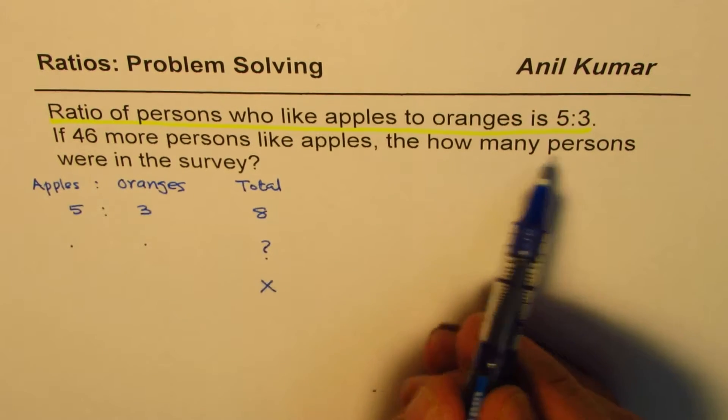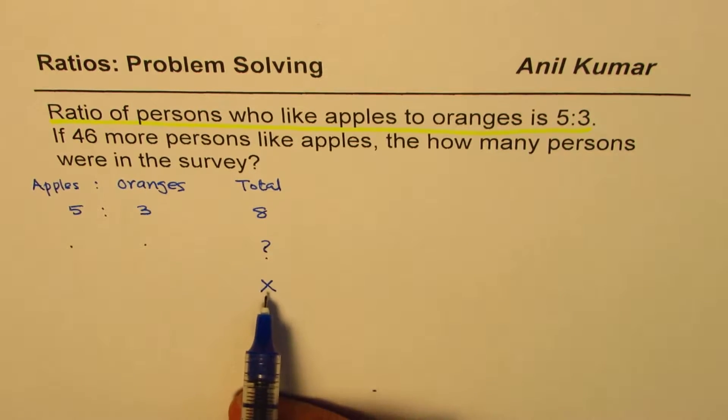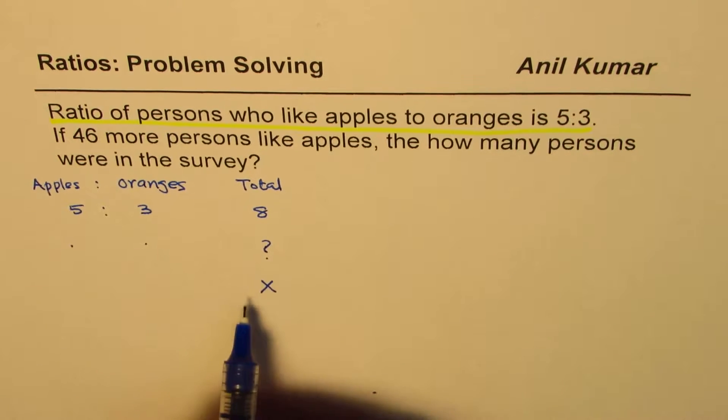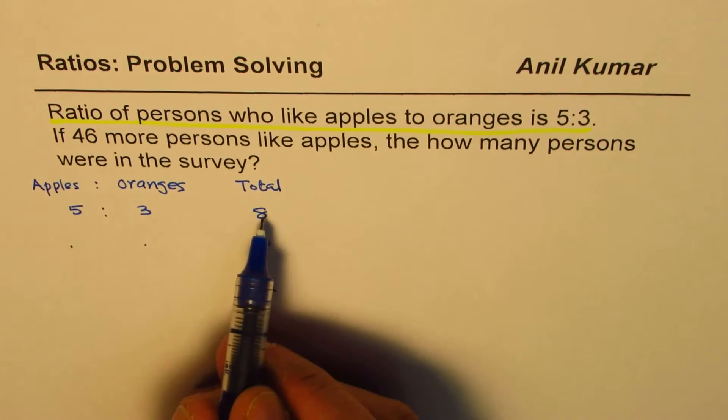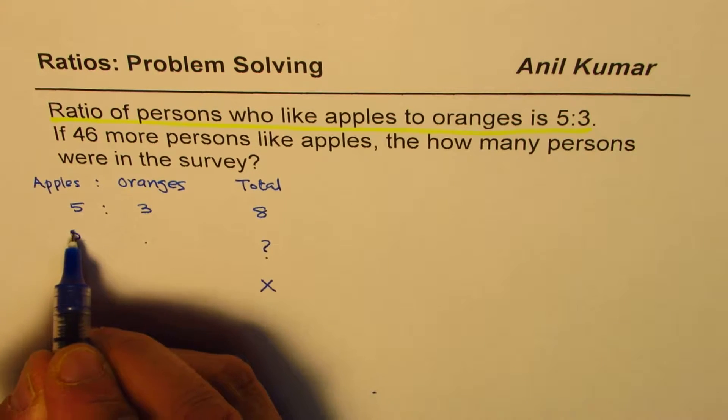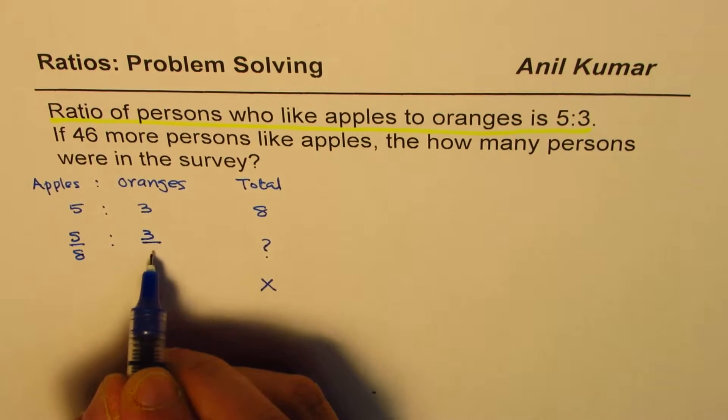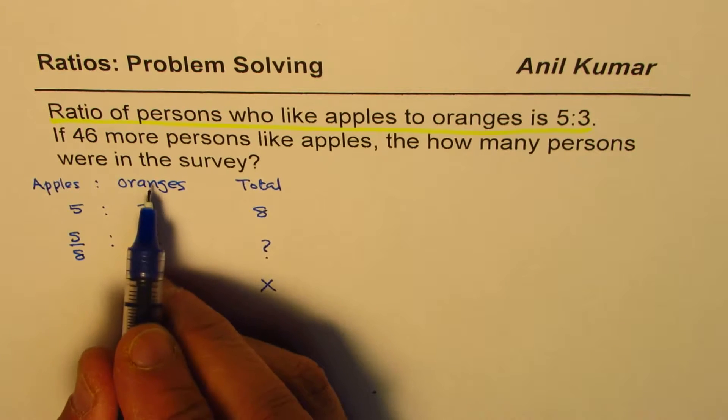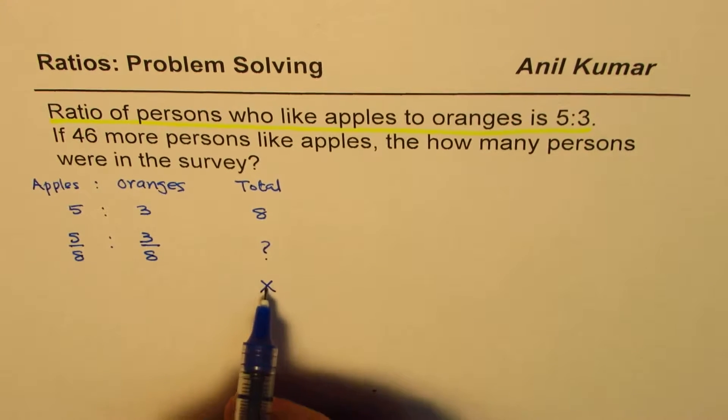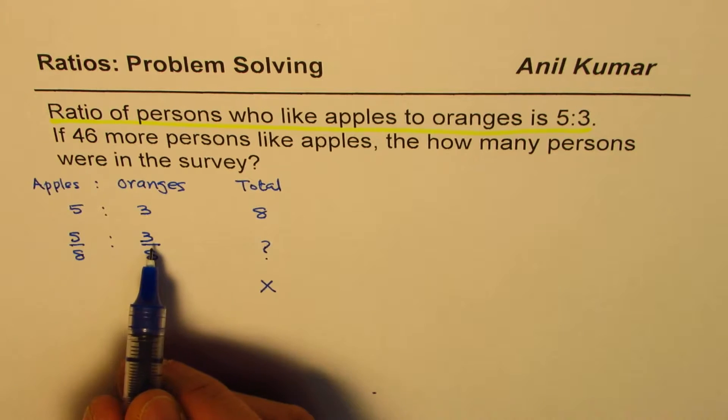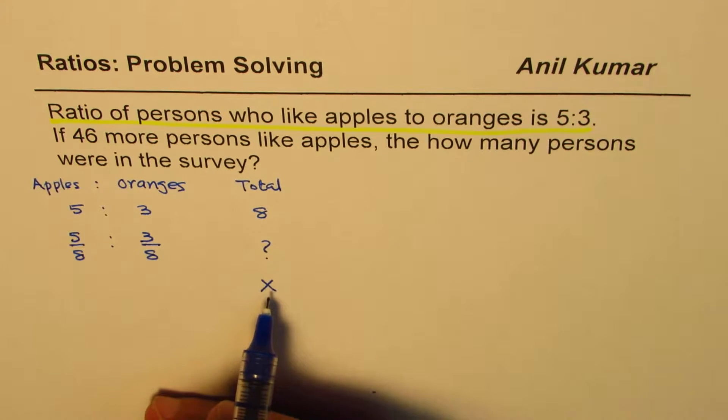Let the number of persons surveyed be X. Now when X persons are surveyed, if 8 are surveyed, then 5 out of 8 like apples and 3 out of 8 will like oranges. If you survey X, then this number gets multiplied by X.